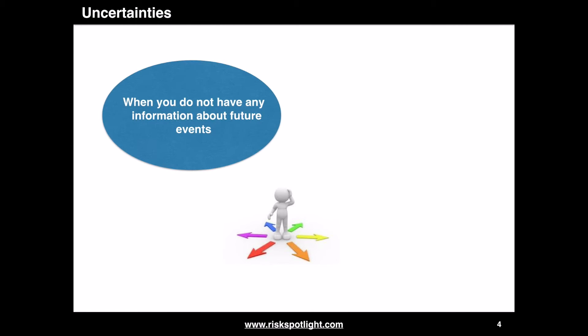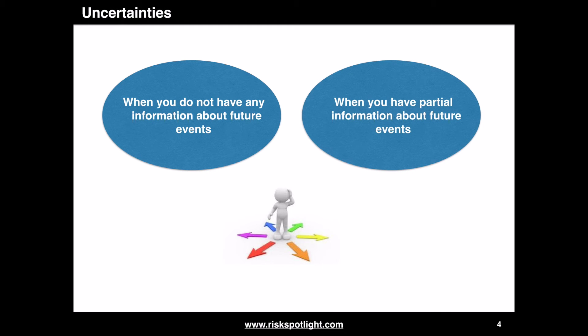Uncertainty can be of two types. First, when we do not have any information about future events, and second, when we have partial information about future events.